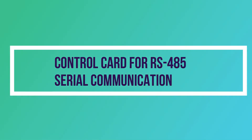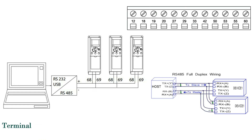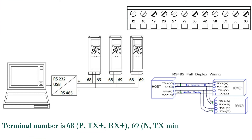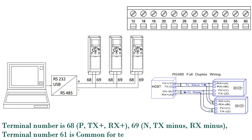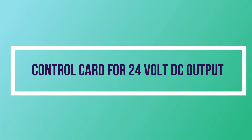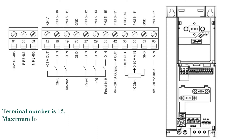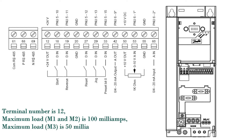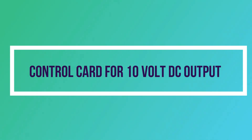Control card for RS-485 serial communication: terminal 68 is P (TX+/RX+), terminal 69 is N (TX-/RX-), terminal 61 is common for terminals 68 and 69. Control card for 24 volt DC output: terminal number is 12; maximum load M1 and M2 is 100 milliamps; maximum load M3 is 50 milliamps; maximum load M4 and M5 is 80 milliamps.